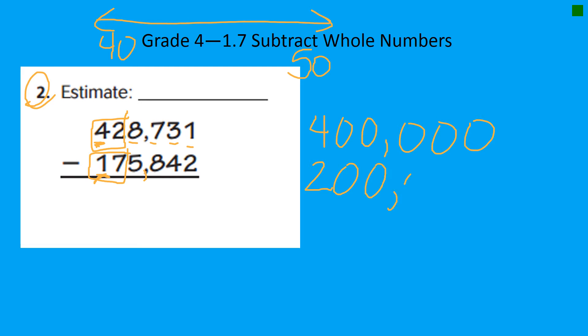Think about where 17 is on a number line between 10 and 20. It's definitely closer to 20. And of course, we are remembering all the place values because we're up in the 100,000 zone.